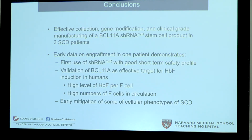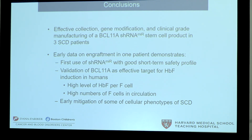In conclusion, we've shown effective collection, gene modification, and clinical-grade manufacturing of a BCL11A-targeted stem cell product in three patients. Early data on engraftment in one patient demonstrates the first use of this schmear construct vector with a good short-term safety profile. Validation of BCL11A as an effective target for fetal hemoglobin induction in humans, as evidenced by high level of fetal hemoglobin per F-cell and high numbers of F-cells in circulation.